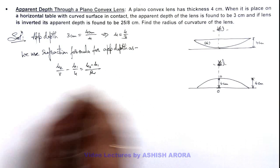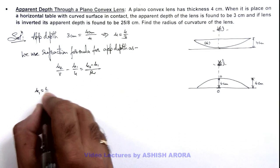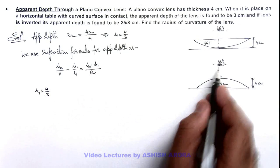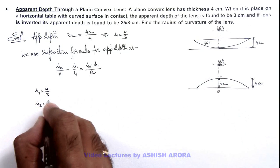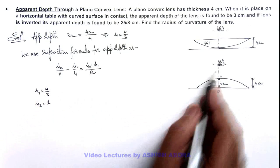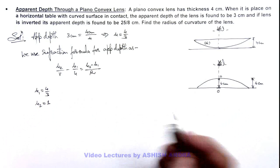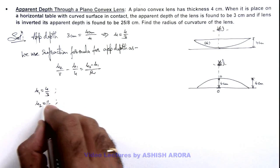The value of μ₁ we take as 4/3, because light rays go from glass to air. We take μ₂ as 1, as the refractive index of the outside medium air is 1.